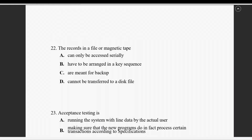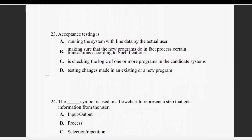Question twenty-two: records in a file on magnetic tape — the records can be accessed serially. This can be accessed serially.